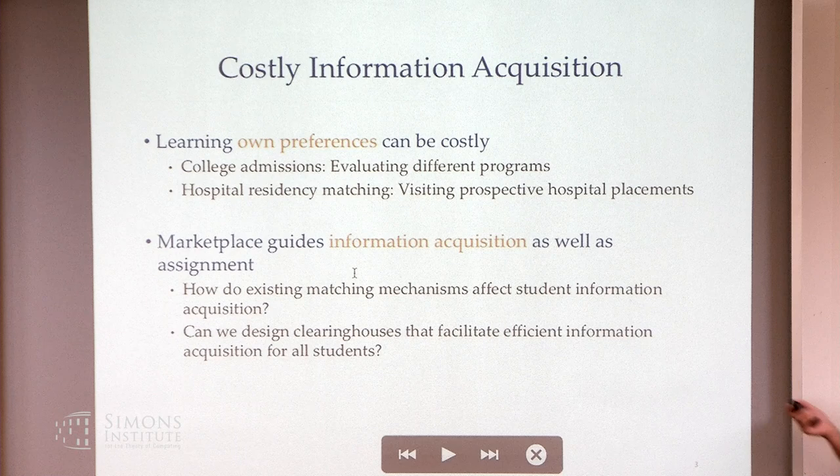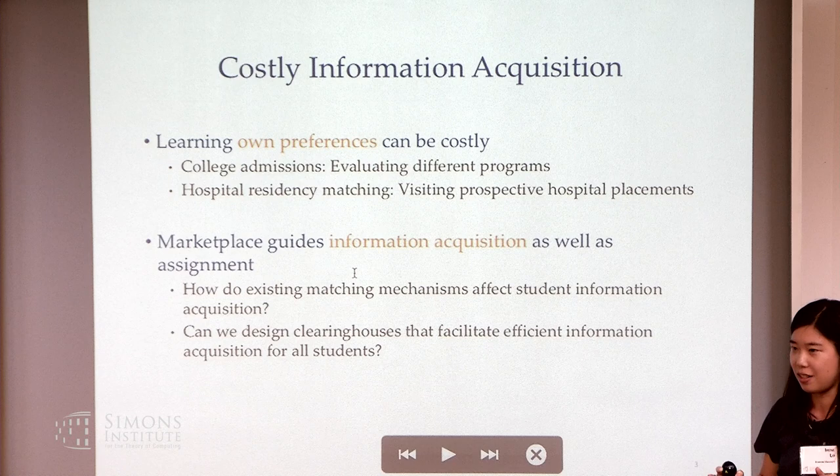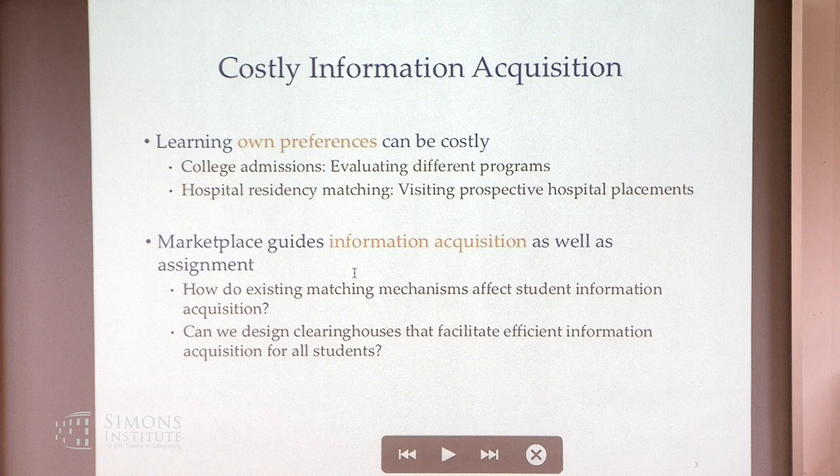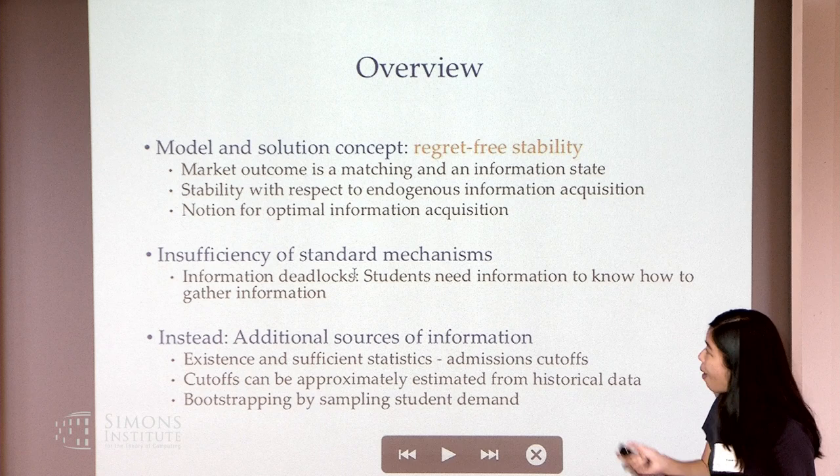We're going to look at the marketplace as both a place that determines the final assignment of agents to objects and facilitates the acquisition and transfer of information between all participants. With this in mind, we ask: how do existing matching mechanisms affect student information acquisition, and can we design clearinghouses that facilitate efficient information acquisition for all students?